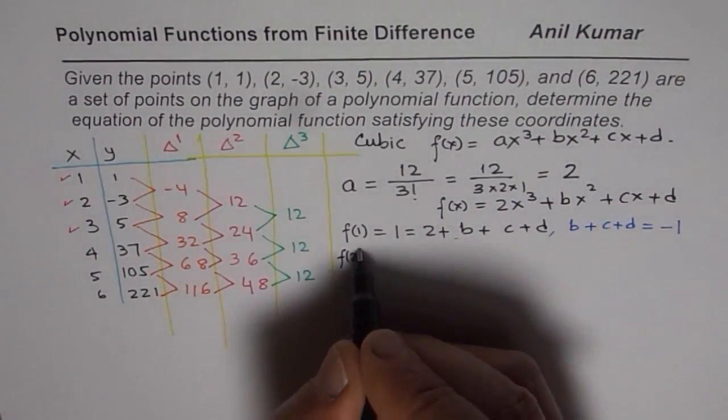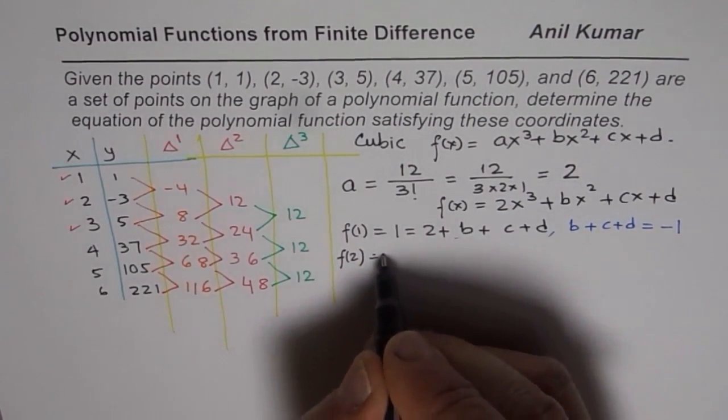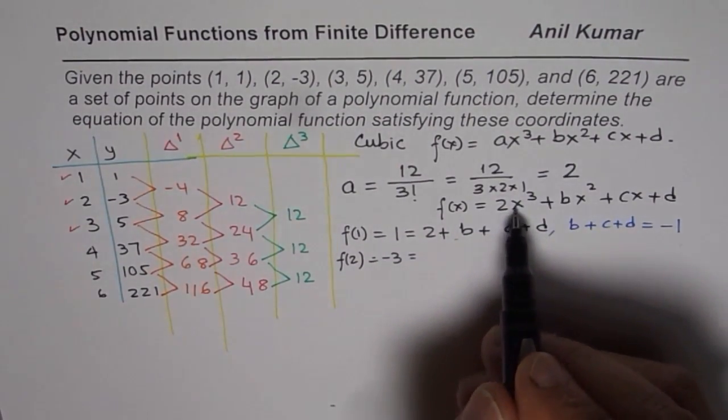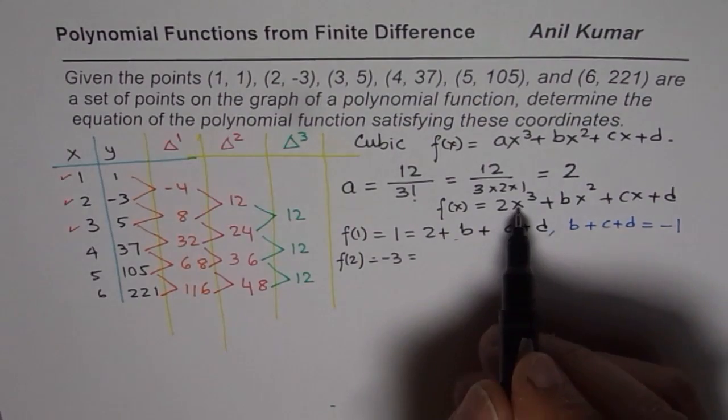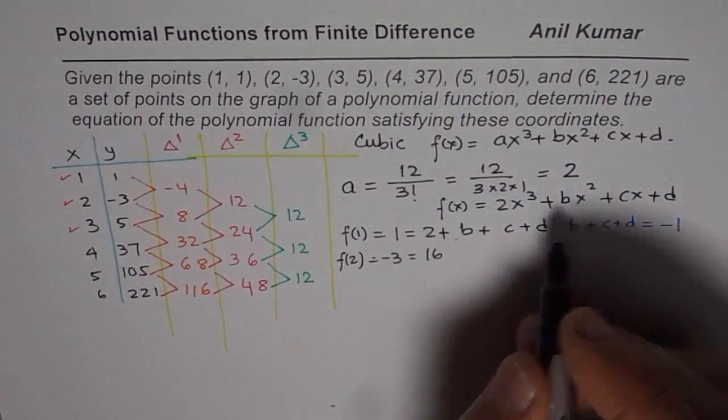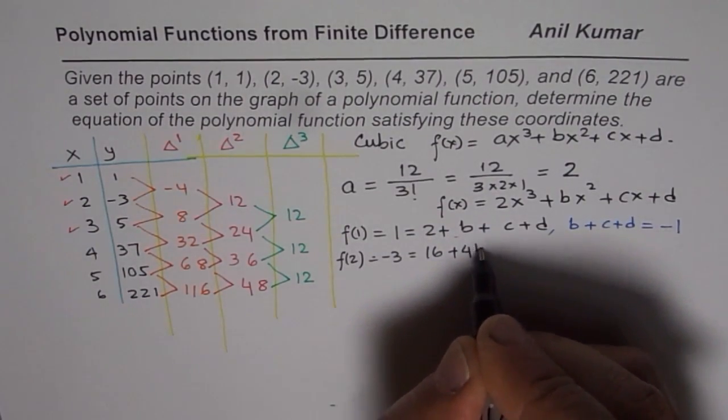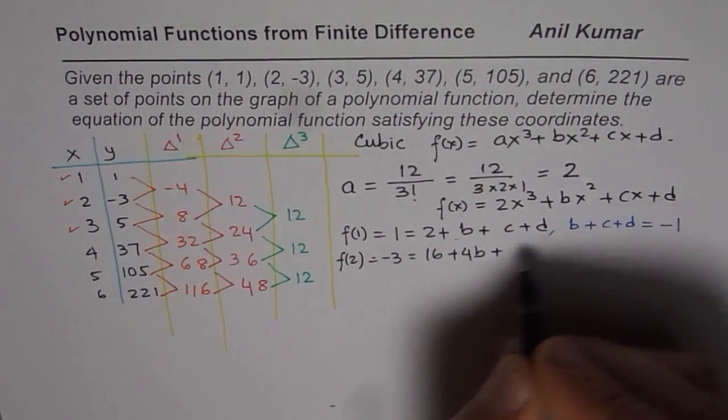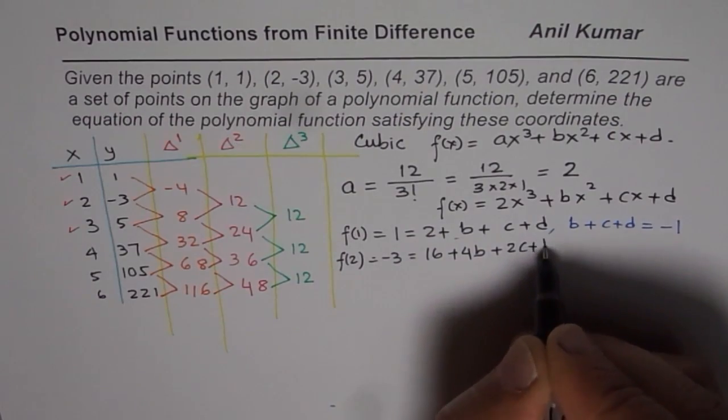Let us find the second equation. f(2) equals -3. When you substitute 2 here, 2 cubed is 8, 8 times 2 is 16, so you get 16 here. 2 squared is 4, so you get 4b + 2c + d.